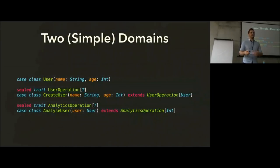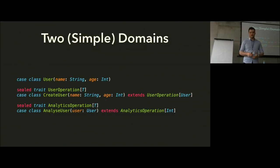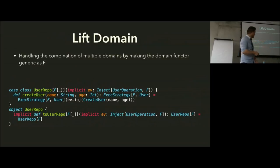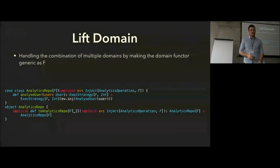Let's consider this with more than one domain. It's common when using free monad or domain-driven design to separate out your domains. We'll create two simple domains each with only one operation: the user domain, which just has create-user, and the analytics domain, which has a way to analyze a user. We can lift our user repository using inject, which lets us lift it into a coproduct so we can combine all of our domains. We do the same with the analytics repository — this is mostly boilerplate written once.